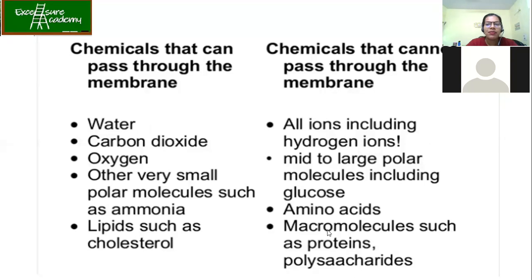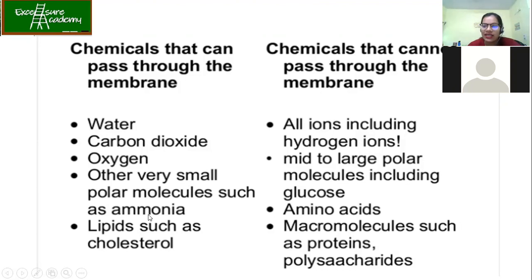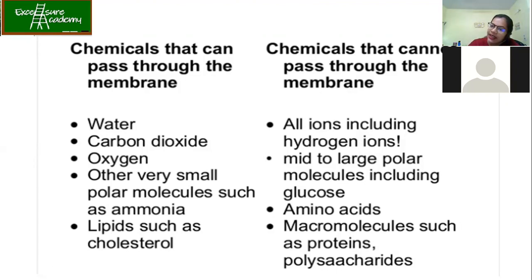Chemicals that can pass through the membrane include water, because it is small in size; gases like carbon dioxide and oxygen; very small polar molecules such as ammonia (NH₃), which is small enough to cross; and lipids such as cholesterol. Cholesterol is already present in the phospholipid bilayer, so if cholesterol is present in the external environment and the organism needs it inside, it can pass through without any support.